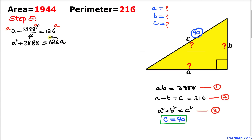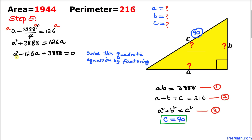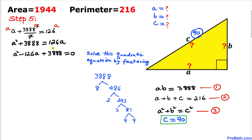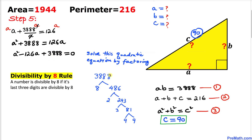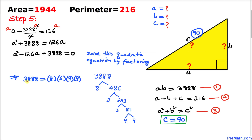Moving 126a to the left side, we get the quadratic equation: a squared minus 126a plus 3888 equals 0. Now we are going to solve it by factoring. Focusing on the constant 3888, it is divisible by 8, and breaking it down we find factors 8, 6, 9, and 9.